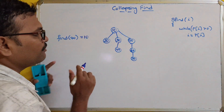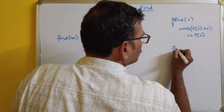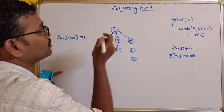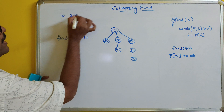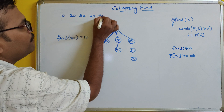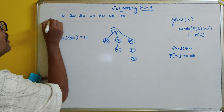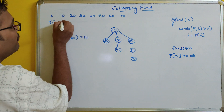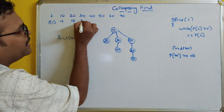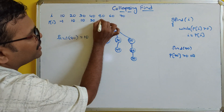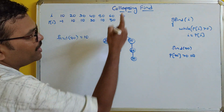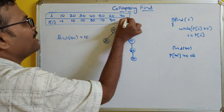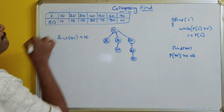For example, for find of 70 using simple find, the values are: 10, 20, 30, 40, 50, 60, and 70. Parent of 10 (the root node) is minus 1. Parent of 20 is 10. Parent of 30 is 10. Parent of 40 is 30. Parent of 50 is 10. Parent of 60 is 50. Parent of 70 is 60. This is the complete table of elements and their corresponding parents.